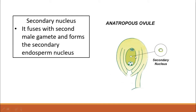The secondary nucleus is located in the center of the embryo sac. As we discussed in the development of male gametophyte, two male gametes are produced. One male gamete fuses with the egg cell to form the zygote. The second male gamete fuses with the secondary nucleus to form the secondary endosperm nucleus, which eventually gives rise to the endosperm. The endosperm helps in the development of the growing embryo.